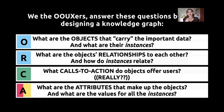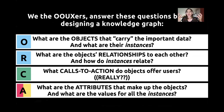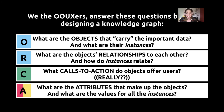Now we started thinking: we, the OUXers, answer these questions before designing a knowledge graph. Thinking about not only what objects carry all the important data, but we need instances — we need to gather all instances and make sure the data is clean. What are the objects' relationships to each other and how do individual instances relate? Calls to action — is that the one that doesn't belong? And what are the attributes that make up the objects and what are the values for all of those instances?